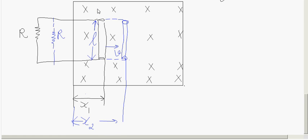P is at one end and Q at the other end of the rod. Rod PQ was at position X1 — a distance X1 from the edge of the magnetic field — at time T1. Then it moves, and at T2 it takes position X2, as shown in the figure.